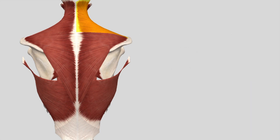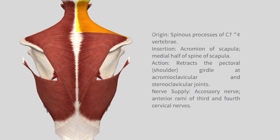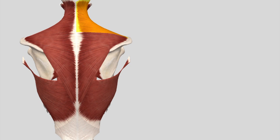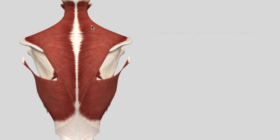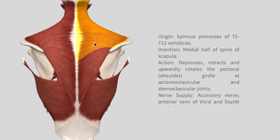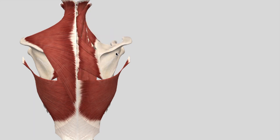The transverse part starts from the spinous processes and inserts into the acromion of the scapula. The ascending part, which is the very bottom part, starts on the spinous process from T5 to T12 and inserts itself into the acromioclavicular joint as well.